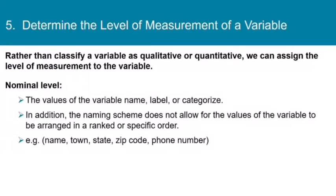Now let's switch gears just a little bit and talk about the level of measurement of a variable. Rather than classify a variable as qualitative or quantitative, we can assign a level of measurement to the variable. And there are four levels, and we're going to talk about each one individually, and then we'll practice. So first off, the nominal level is the lowest level. At the nominal level, the values of the variable either name or label or categorize, and really nothing more. For example, the naming scheme does not allow for the values of the variable to be arranged in a ranked or specific order.